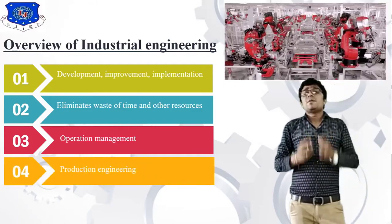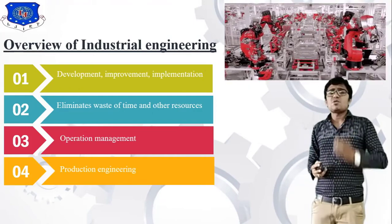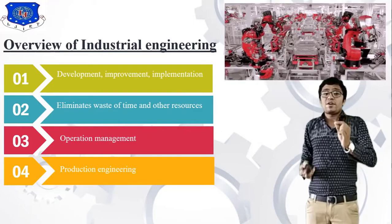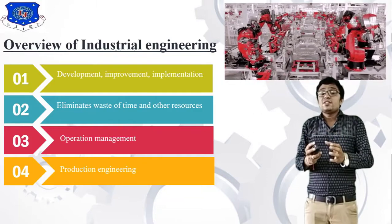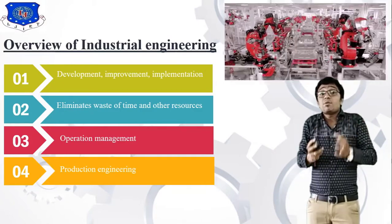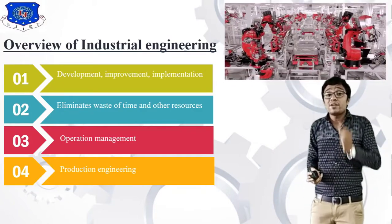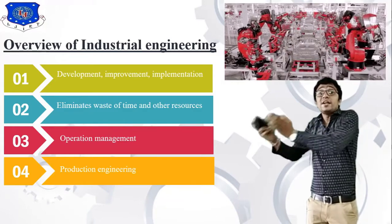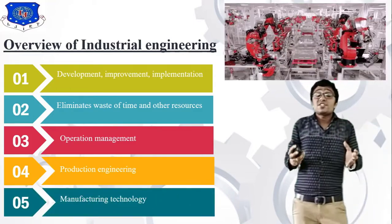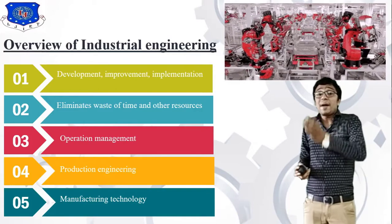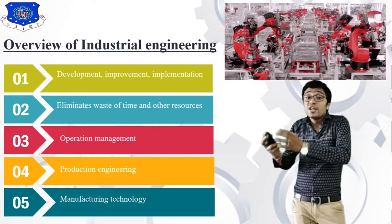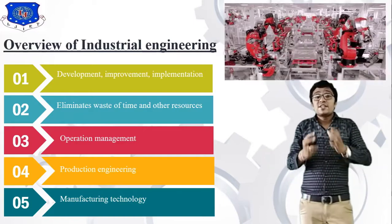Number four is production engineering, which is also very important. The basic goal of industrial engineering is clear: it is to improve our product, improve our method study, improve our work study, and improve our efficiency with new technology. Basically, industrial engineering depends on manufacturing technology — manufacturing process one and manufacturing process two, which we have already studied in a previous semester.